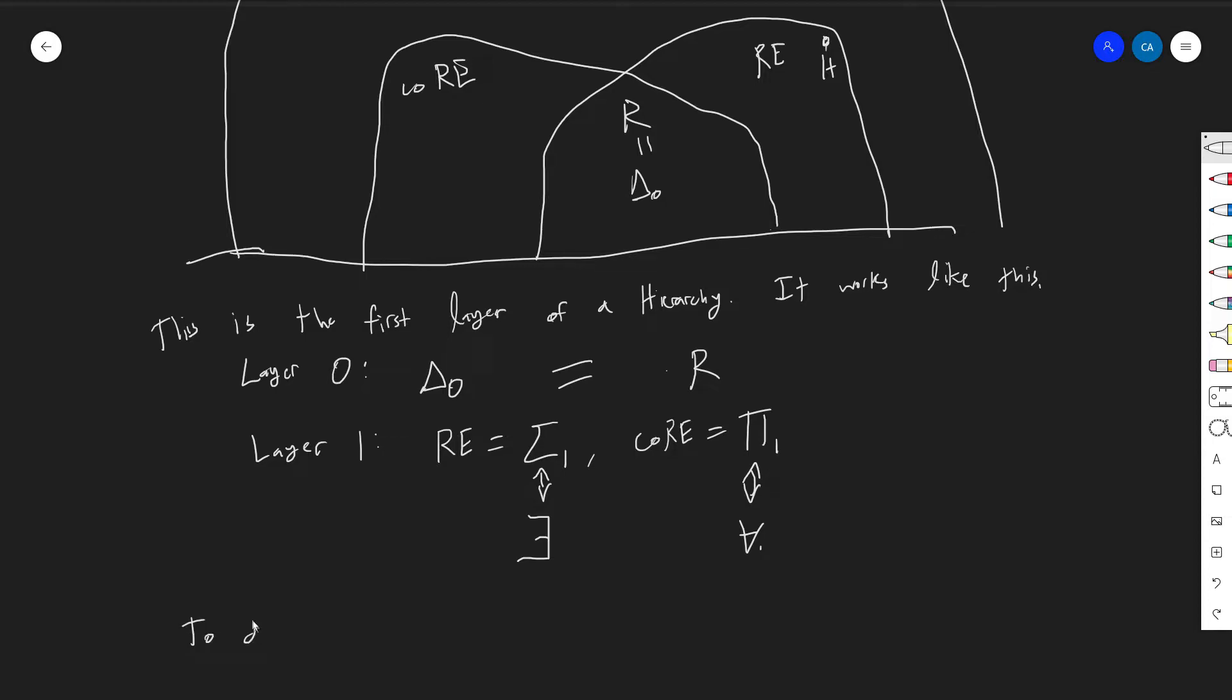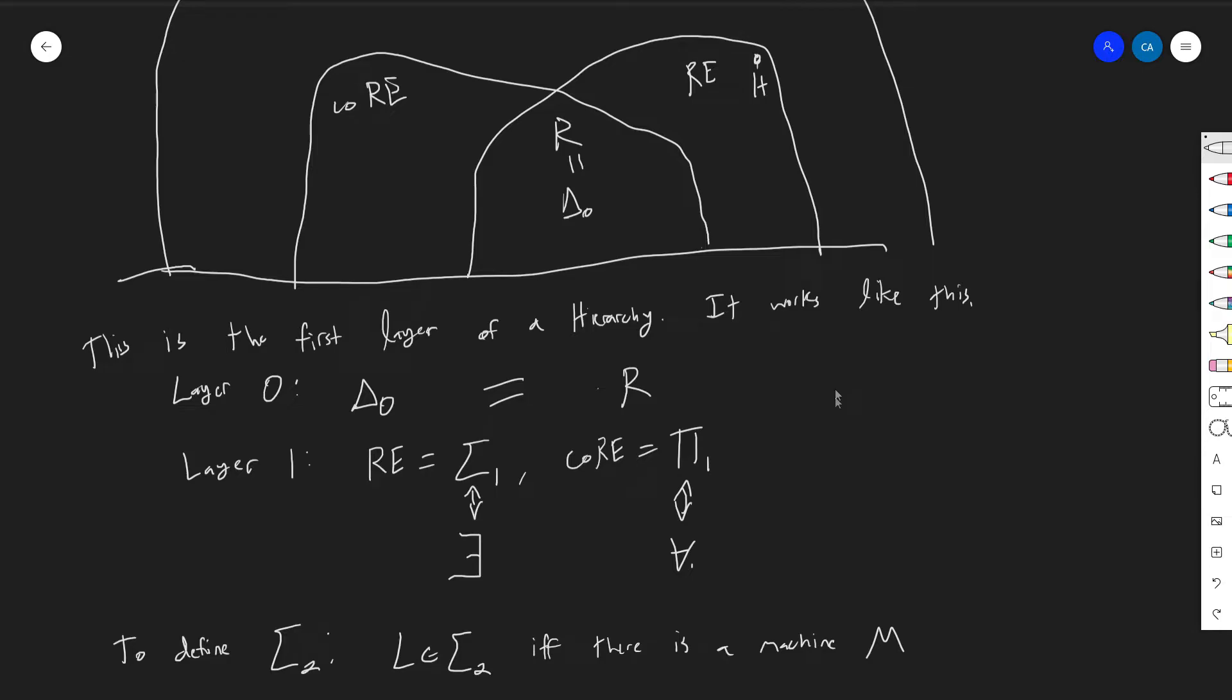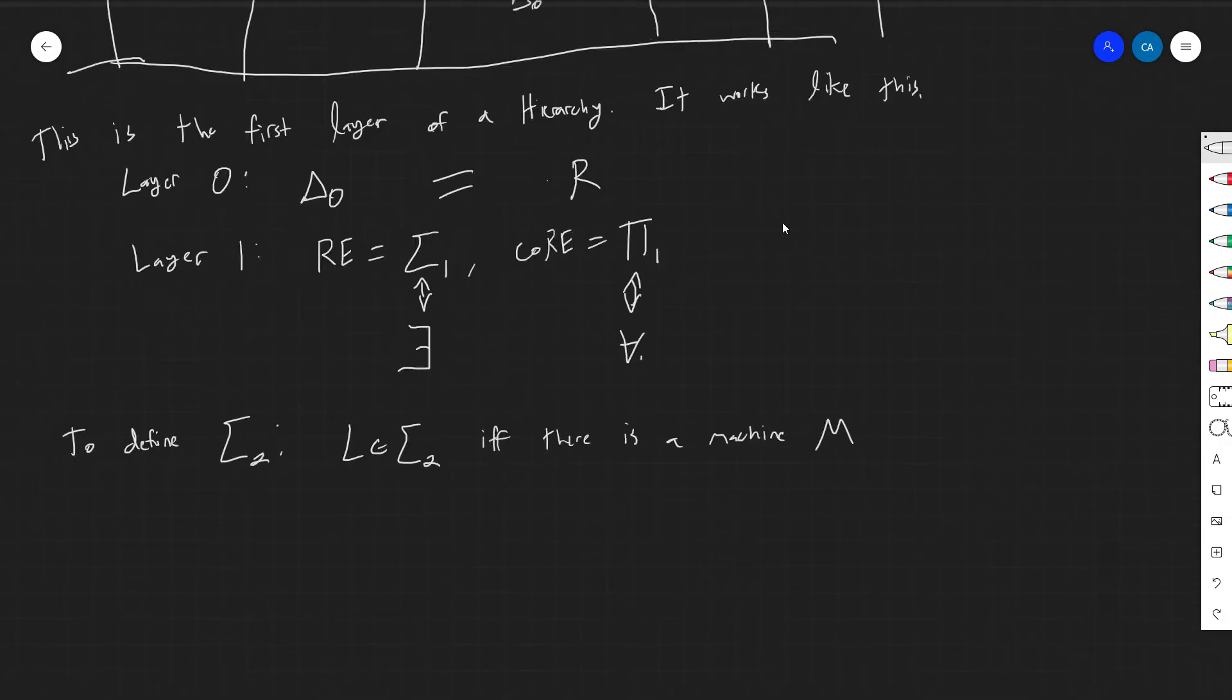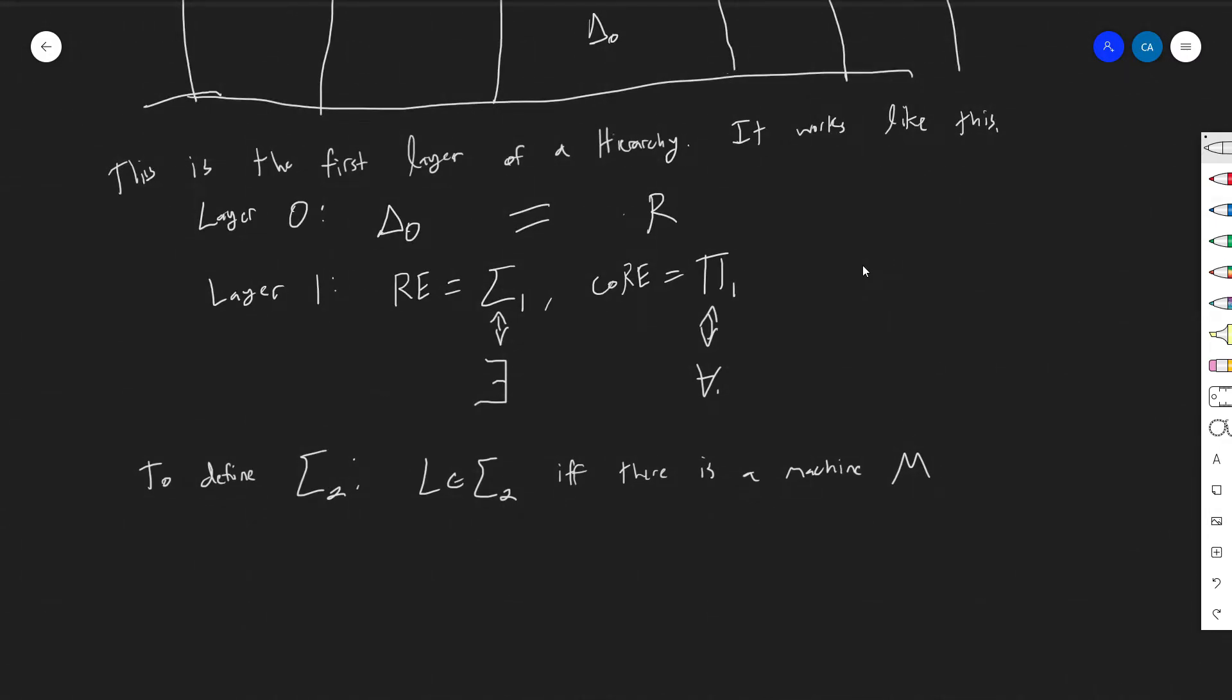So to define sigma 2, it'll be this. L will be in sigma 2 if, if and only if, there is a machine M. And if this is confusing the crap out of you, do not worry. This is, we're going to, we'll kind of return to it, but like the important three are just R, co-RI, and RI. I don't really have to get into what I'm saying right now, but I, it will be nice that I do it. If there's a machine M, oh sorry, yeah, let me not miss a machine.